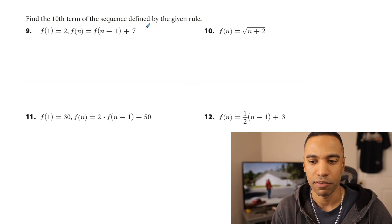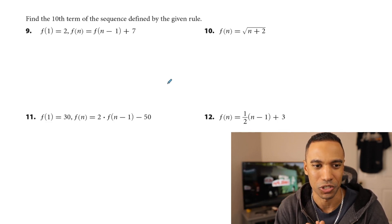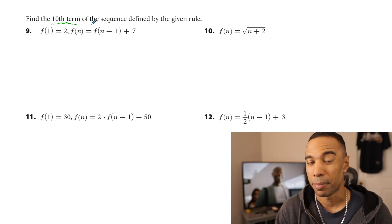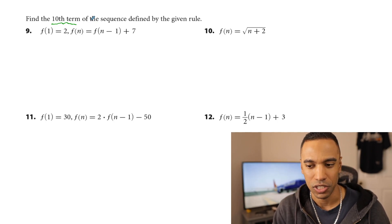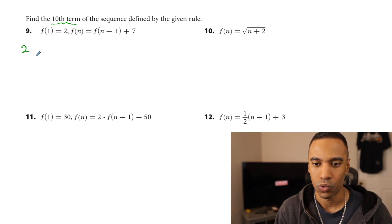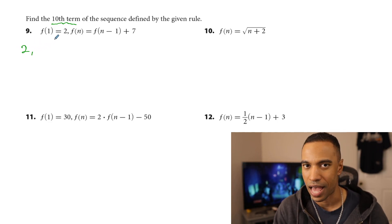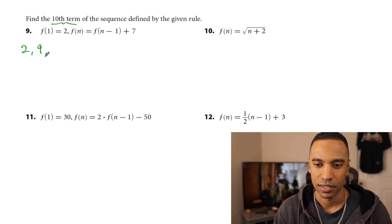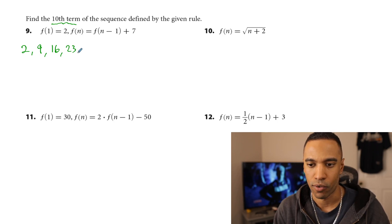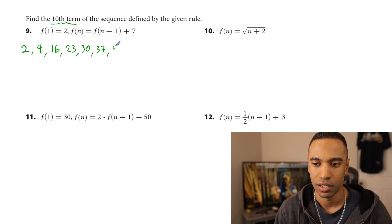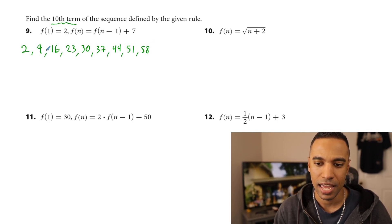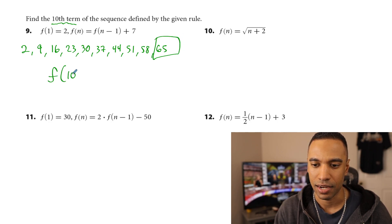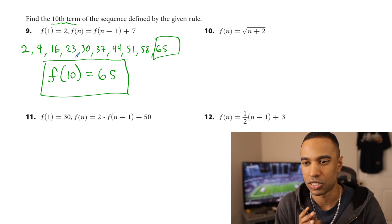Find the 10th term of the sequence defined by the given rule. The 10th term requires that if you have a recursive function, you probably spell out the first nine terms to make it work. This one: the first term is 2. The rule adds 7 each time. Plus 7 gives 9 as the second term, 16 as the third, 23 as the fourth, 30, 37, 44, 51, 58 — that's the 9th term. And the 10th term is then 65. So f of 10 equals 65.